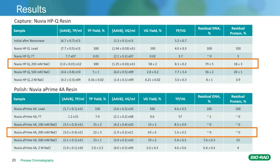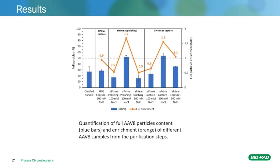Here is a table of the results of all the analytical work that was performed. On the top you have the Nuvia HPQ. As you can see in the 200 mM salt fraction, you have a total particle yield of 100% with some residual DNA and residual protein removal. That is then run over the Nuvia A'4A after a 1-to-5 dilution in the equilibration buffer. If you focus on the 200 mM fraction for the A'4A, you can see the viral genome enrichment as well as complete removal of the residual DNA and protein. In the bar graph showing the quantification of full AAV8 particle content and enrichment, you can see in the HPQ there is no enrichment of the empty versus full capsids. However, both the A'4A as polishing as well as the A'4A as a capture alone shows full particle enrichment in the 200 mM fraction.